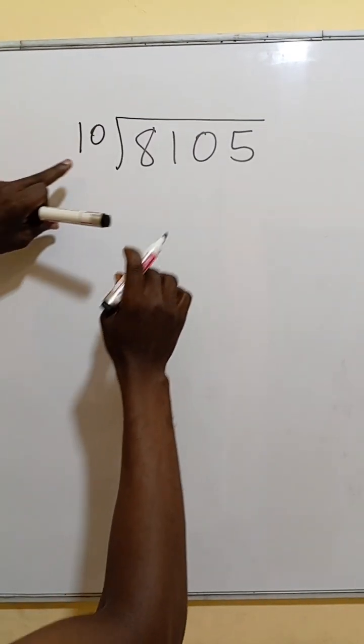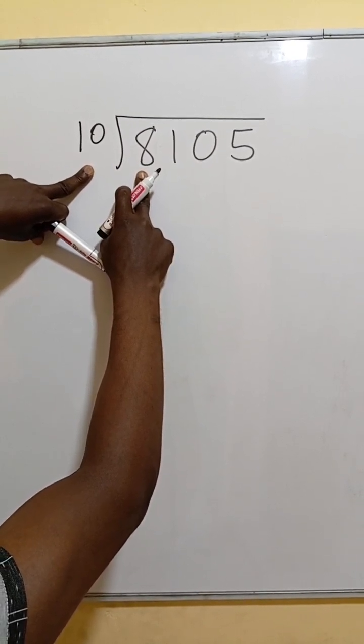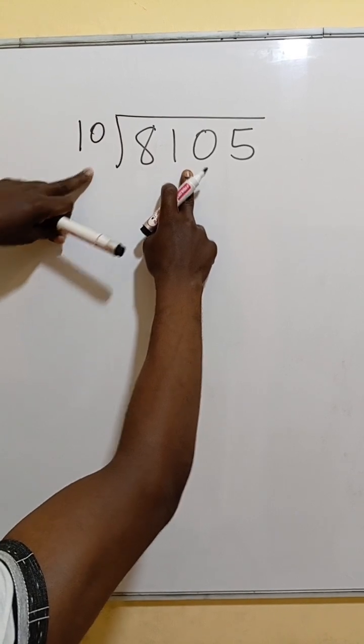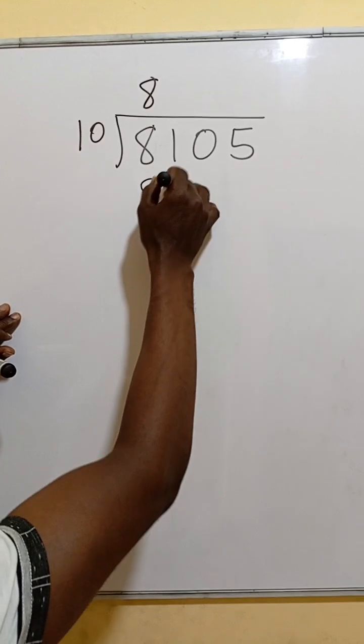So first of all, 10 going into 8, it can't be possible, so we add the 1 making 81. It will go there 8 times. 8 times 10 will be 80.